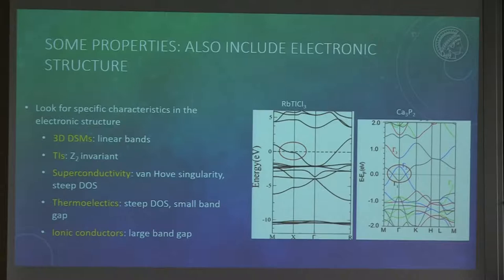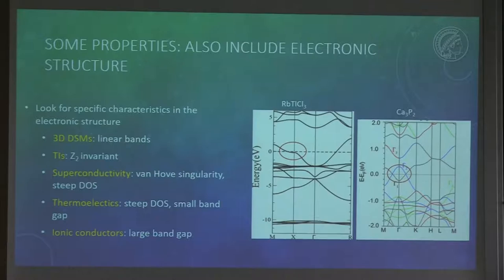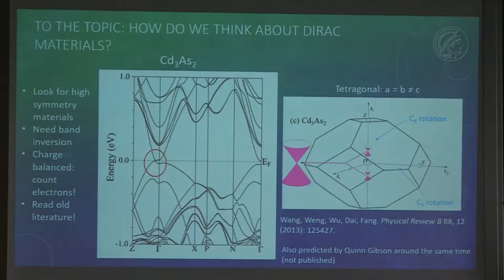Even more and more in solid state chemistry, some of us started looking at electronic structures as well, because now we have commercially available codes and it's easy to calculate them. We don't only want to combine crystal structure and properties, but also combine it with electronic structure, and we can look for motifs within the electronic structures - like Van Hove singularities for superconductivity, or for Dirac and Weyl materials. This gives us basically a triangle of things - three things we can connect and find relations between. Now I'm coming to the topic of how we actually think about 3D Dirac semi-metals.